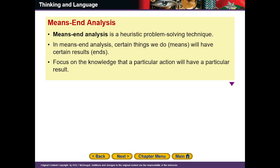Means and analysis میں جو چیزیں ہم problem solving کے لئے کرتے ہیں وہ means ہوتے ہیں اور جو result ان کا ہوتا ہے وہ end ہوتا ہے۔ اس پہ ہمارا جو emphasis ہوتا ہے وہ یہ ہے کہ جو action ہم ابھی کریں گے اس کا result کیا ہوگا — ہم وہ result دیکھتے ہیں، پھر اس کی طرف بڑھتے ہیں۔